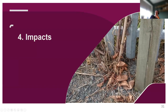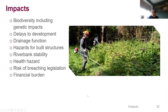Going back to Japanese knotweed identification — this is often what you find when looking for it on site. This is a winter picture showing just a few stems up against a palisade fence — everything's dead, making it very tricky to identify. Looking at the impacts of invasive species: biodiversity impacts, delays to development, drainage function issues, and for some species hazards to built structures. As mentioned, there are also riverbank stability issues, health hazards from giant hogweed and oak processionary moth, the risk of clients and landowners breaching legislation, and of course the financial burden of dealing with these species.